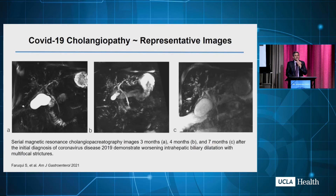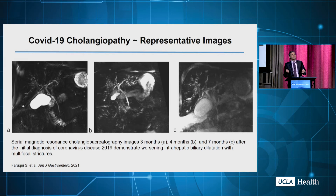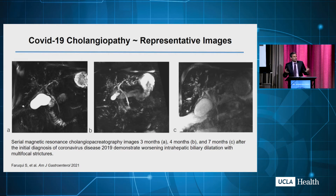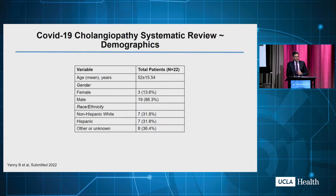The other thing we've seen — and we had a case about a year ago — is cholangiopathy, a secondary cholangitis that on imaging can mimic PSC. You can miss it on ultrasound. So if you have a patient who has a cholestatic picture — high alkaline phosphatase, high bilirubin — think about sclerosing cholangitis from COVID. You need to ask those type of questions.